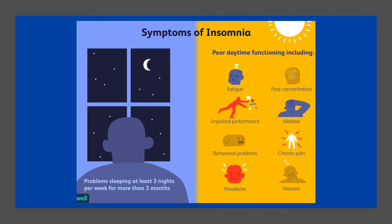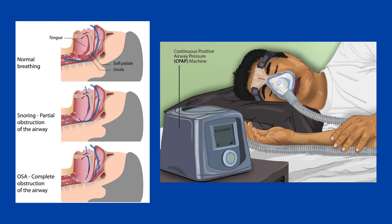Now that we've discussed insomnia, one of the most common and well-known sleep disorders, I'll hand over to Shrey, who will be talking about sleep apnea. Sleep apnea is one of the most common sleep breathing disorders, characterized by your breathing stopping and starting as you sleep. The most common type of sleep apnea is obstructive sleep apnea, where the throat muscles relax during sleep and cause your airways to become blocked.